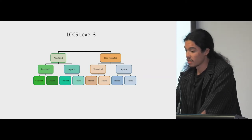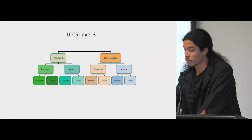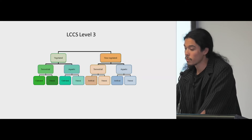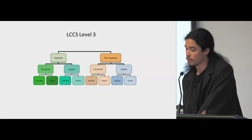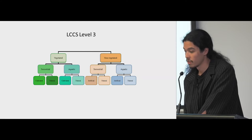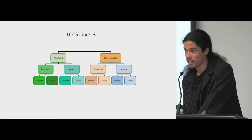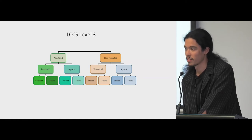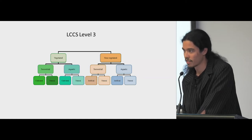It ends up as one of these level three classes. We start off with vegetated or non-vegetated, then we split between terrestrial and aquatic in each of those. As we move further down the tree, we look at cultivated, natural, and bare surfaces, as well as aquatic vegetated — like mangroves — and aquatic cultivated, which I didn't really think of as much of a thing until I started this project.